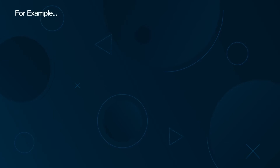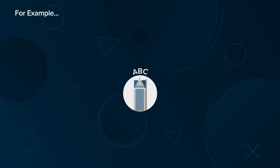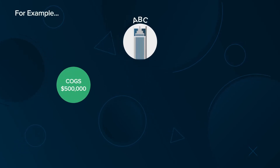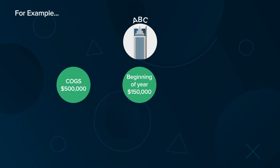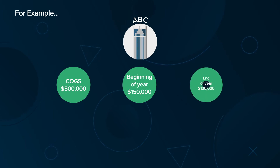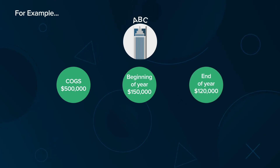For example, suppose company ABC reports $500,000 in cost of goods sold. At the beginning of the year, it has inventory worth $150,000. By its end, the company has inventory worth $120,000.